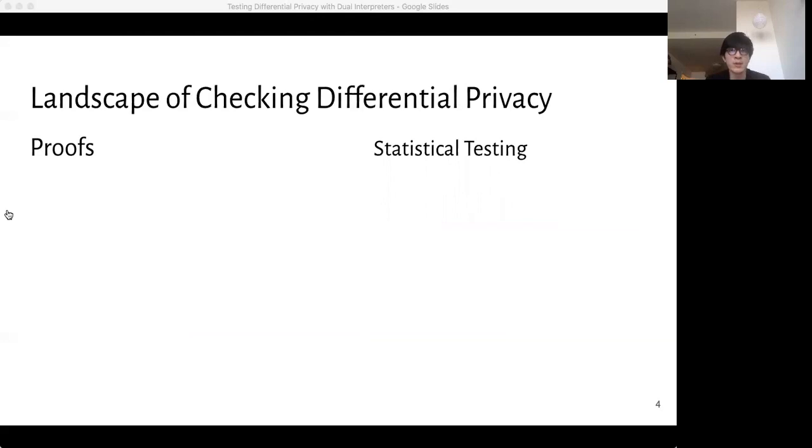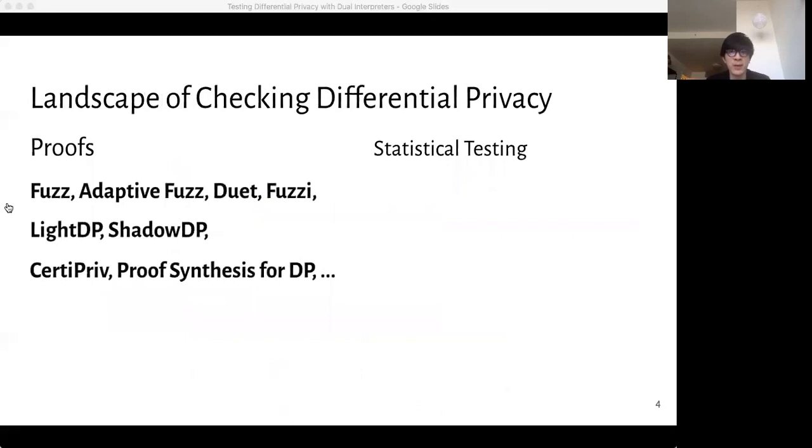There is a rich set of previous work that focuses on automatically validating differential privacy or detecting violations of differential privacy. On the left here, we have systems that try to find evidence of violations of DP through statistical testing. Both kinds of systems have complementary strengths and weaknesses. The proof-based systems give very strong evidence of differential privacy since they're proofs. However, the automated systems often work best on simpler algorithms, and they might fail to type-check more complicated algorithms.